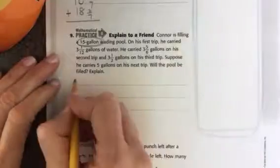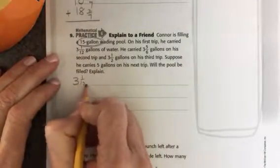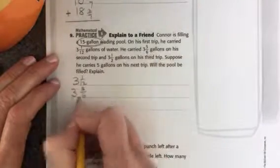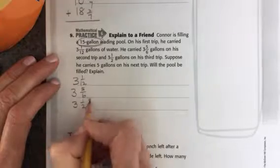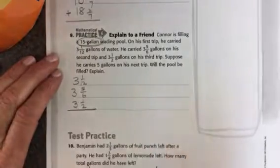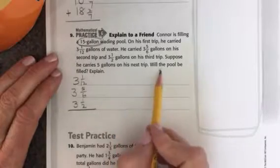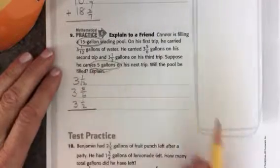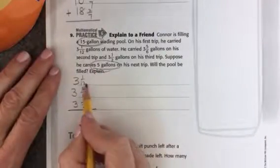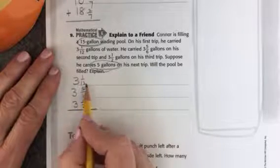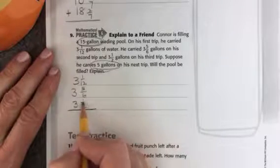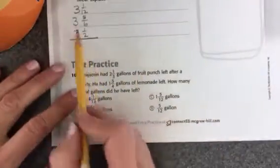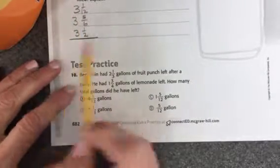So let's do 3 plus 1 twelfth, 3 plus 5 sixths, 3 plus 1 half, and those are the ones that I'm going to add. Okay, to see, and then I'll actually add 5 at the end. This part here to know if the pool will be filled. So I need to get a common denominator with all of these three numbers, 12, 6, and 2. Extend my fraction bar and figure out that part. And then add this up as well.